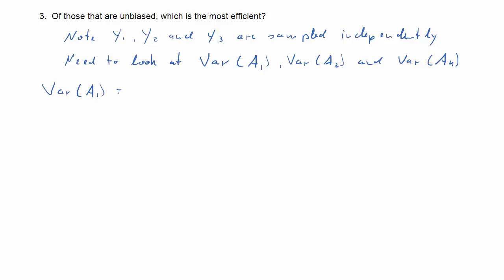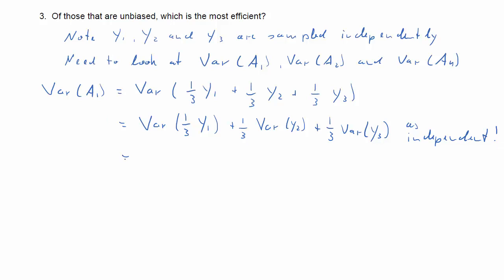Let's first look at the variance of A1. Now that is just equal to the variance and for A1 we replace the formula for A1. A third times y1, a third times y2, a third times y3. Since these are independently sampled, again we don't have to worry about covariances. And therefore that is just the same as the sum of the variance of each individual summand.